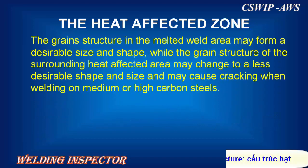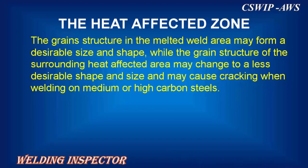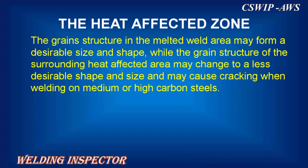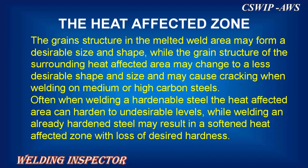The grain structure in the melted weld area may form a desirable size and shape, while the grain structure of the surrounding heat affected area may change to a less desirable shape and size and may cause cracking when welding on medium or high carbon steels. Often when welding a hardenable steel, the heat affected area can harden to undesirable levels, while welding an already hardened steel may result in a softened heat affected zone with loss of desired hardness.